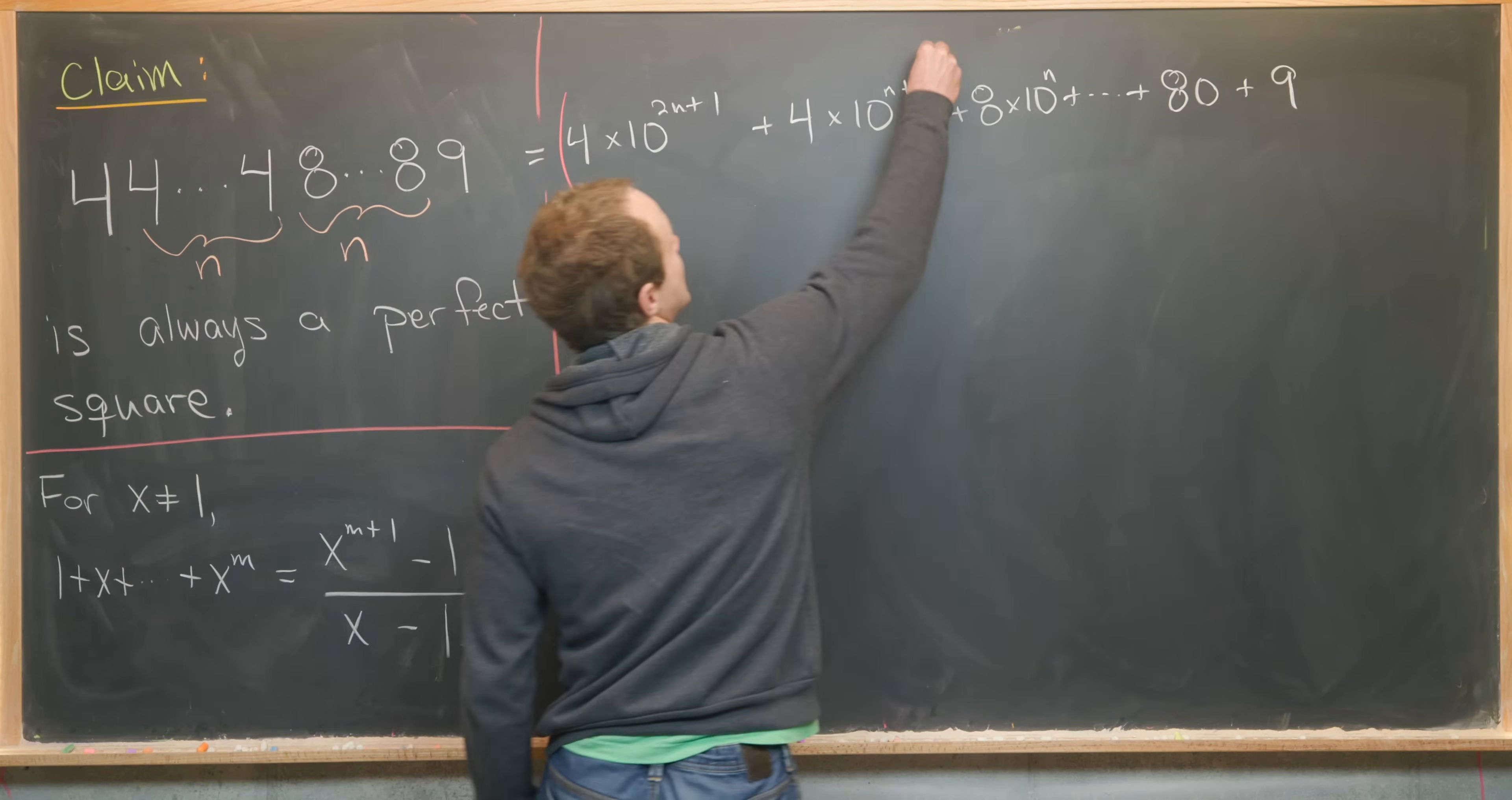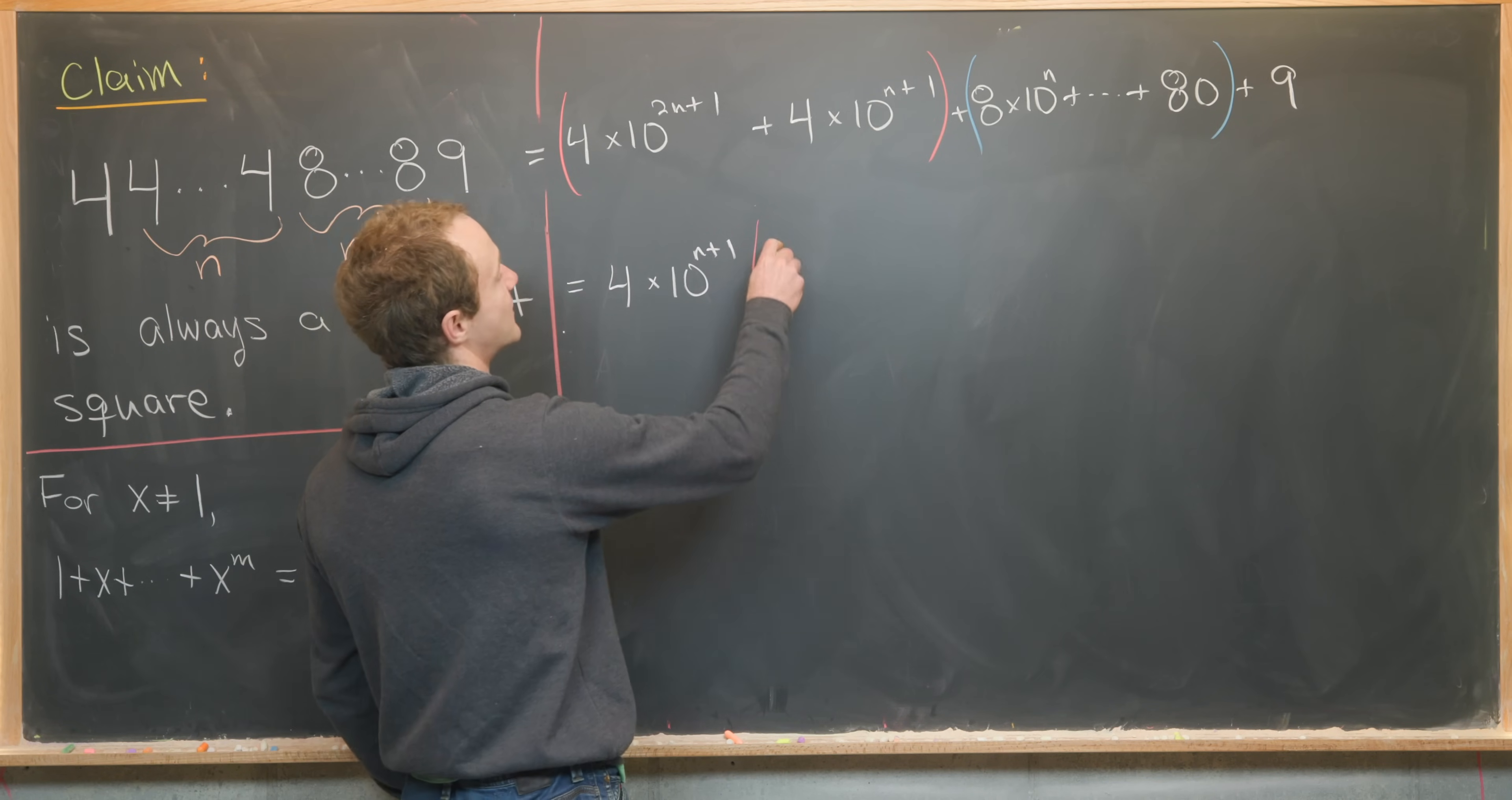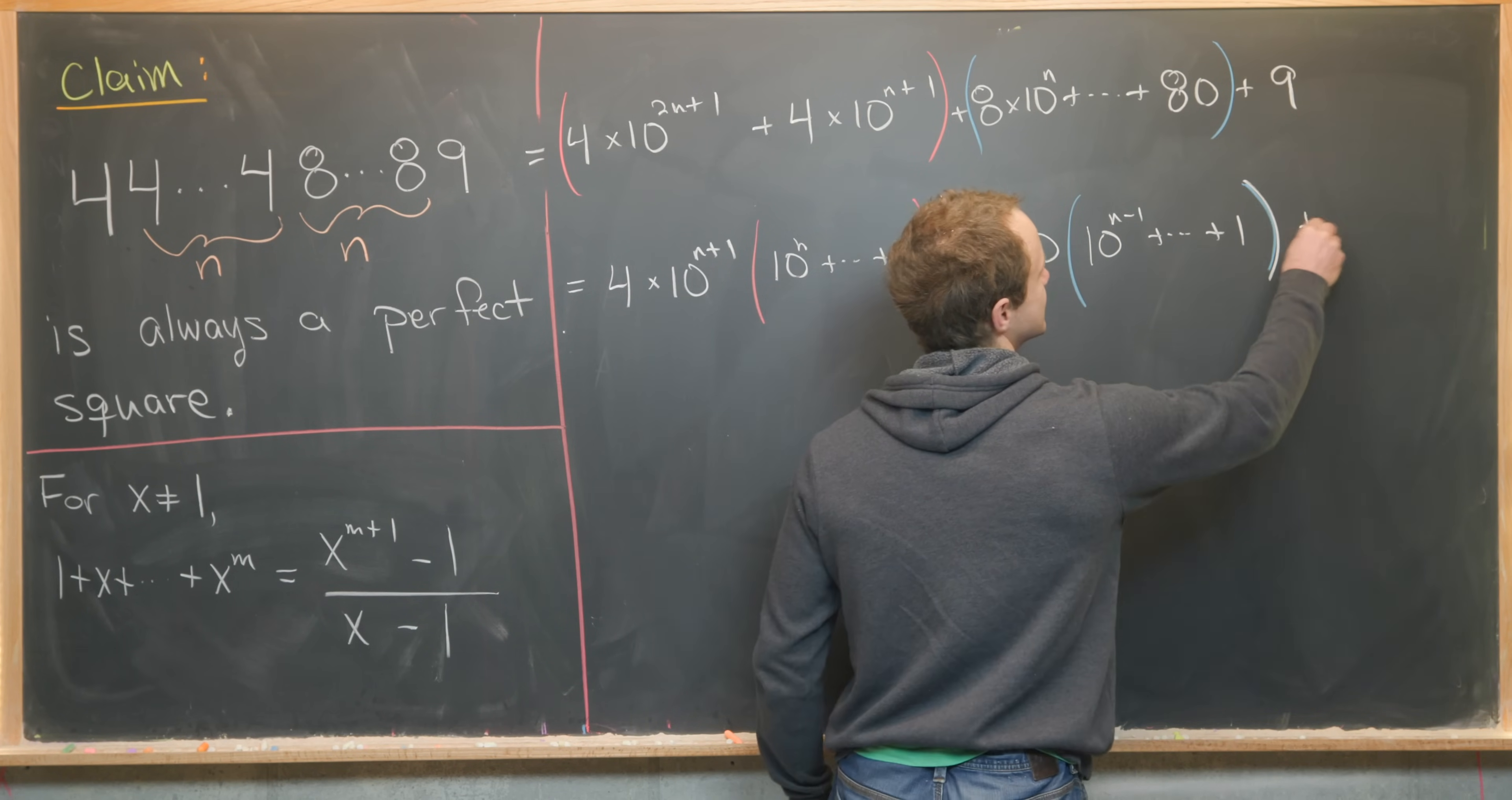So I want to group maybe these first terms that have a 4 times 10 to the something. And then these terms, which have an 8 times 10 to the something. Next, we'll factor a greatest common factor out of each of these. So a greatest common factor out of this bit will be 4 times 10 to the n plus 1. And that leaves us with 10 to the n plus all the way down to 1. And then let's see what we can factor out of the last terms. So we can factor out an 80. And then we'll be left with 10 to the n minus 1, all the way down to 1. And then finally, we've got plus 9 out here.